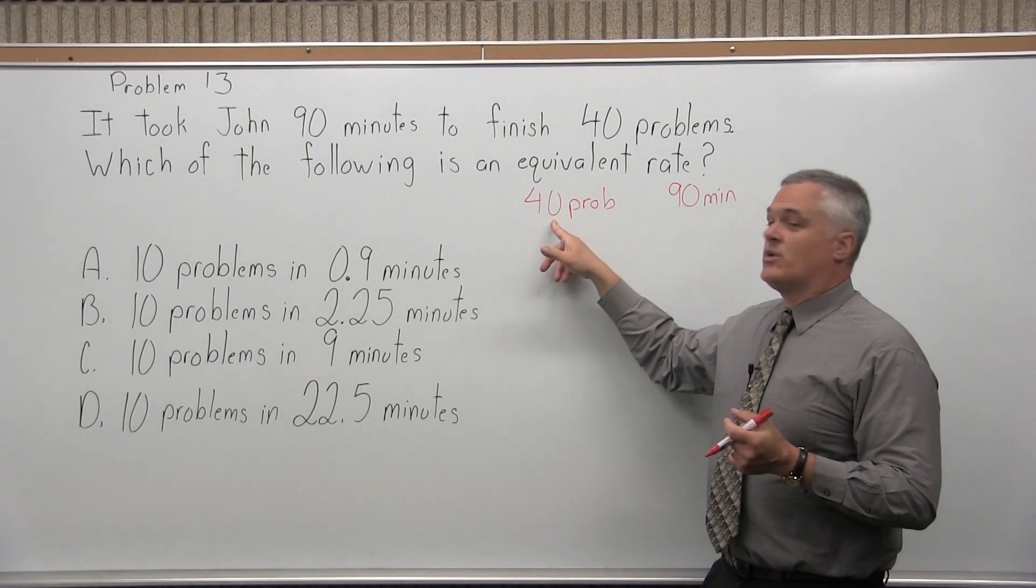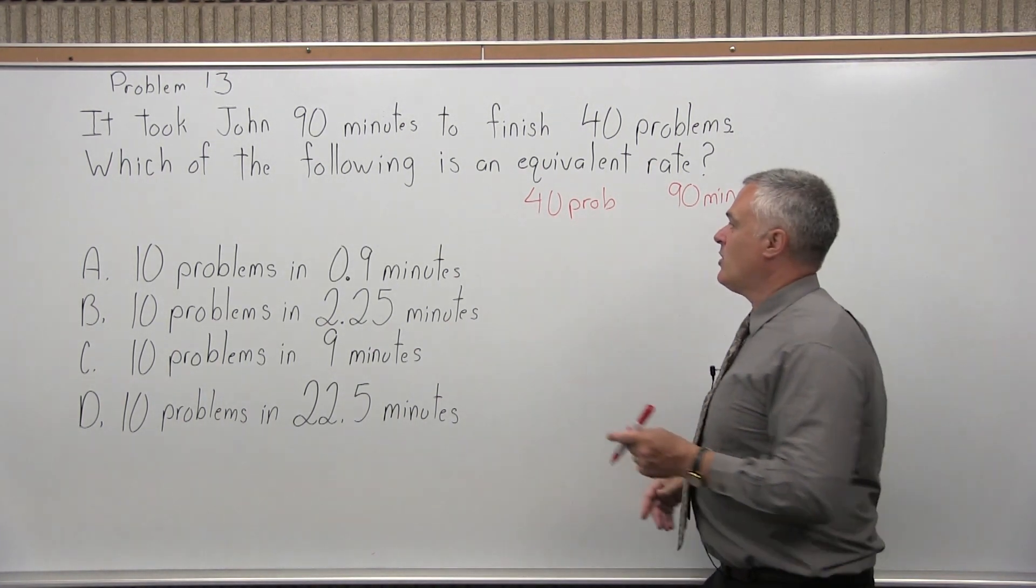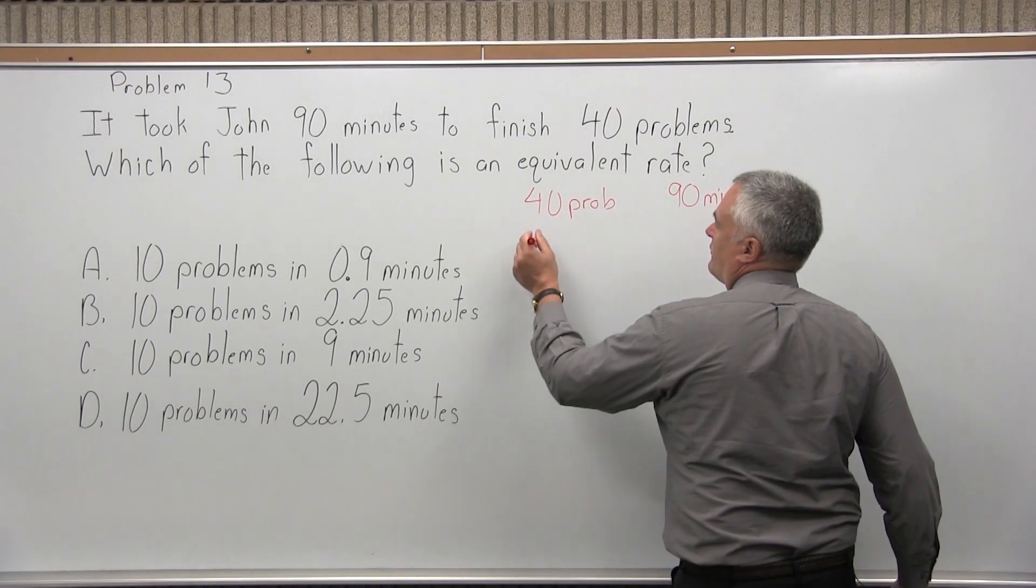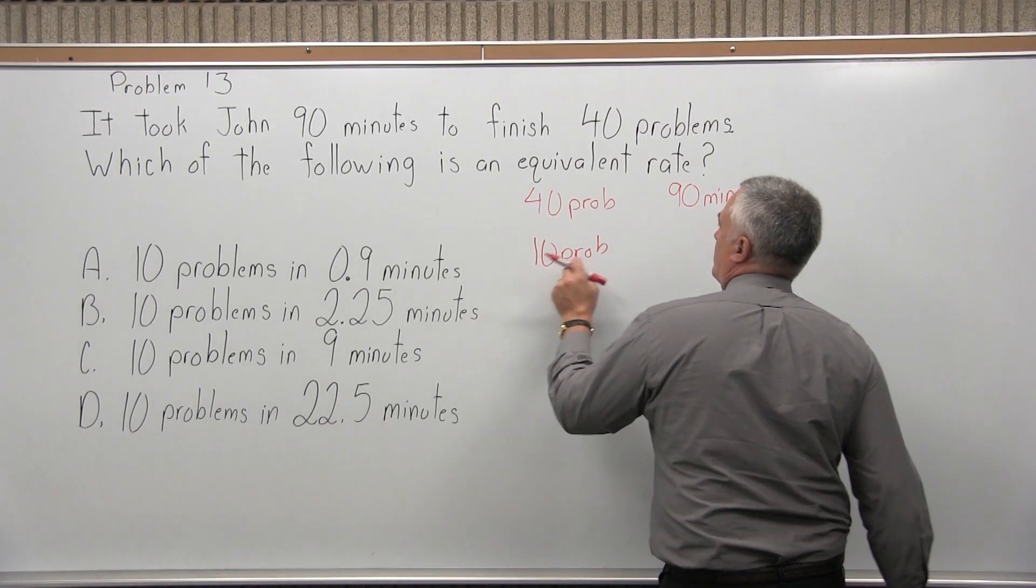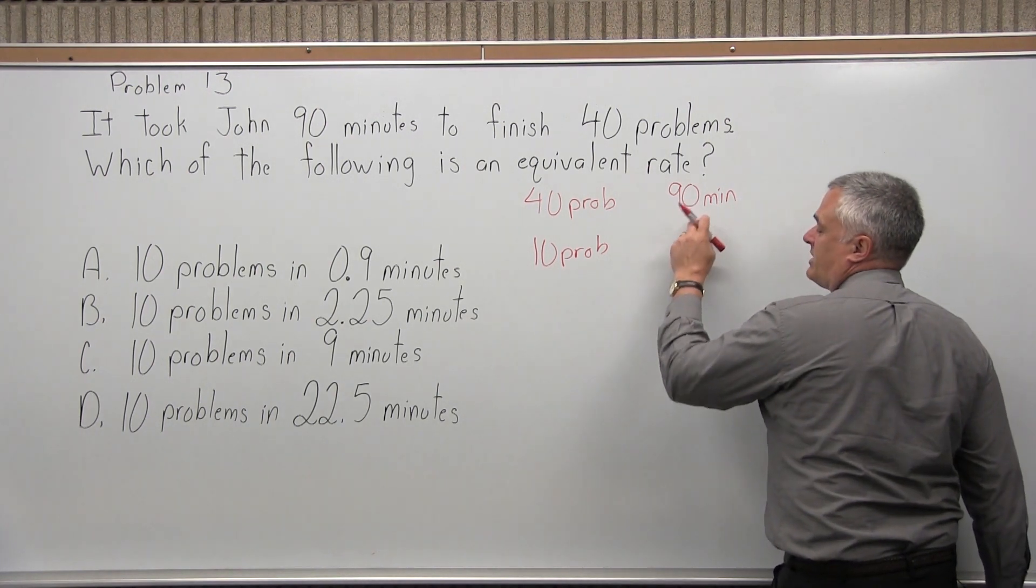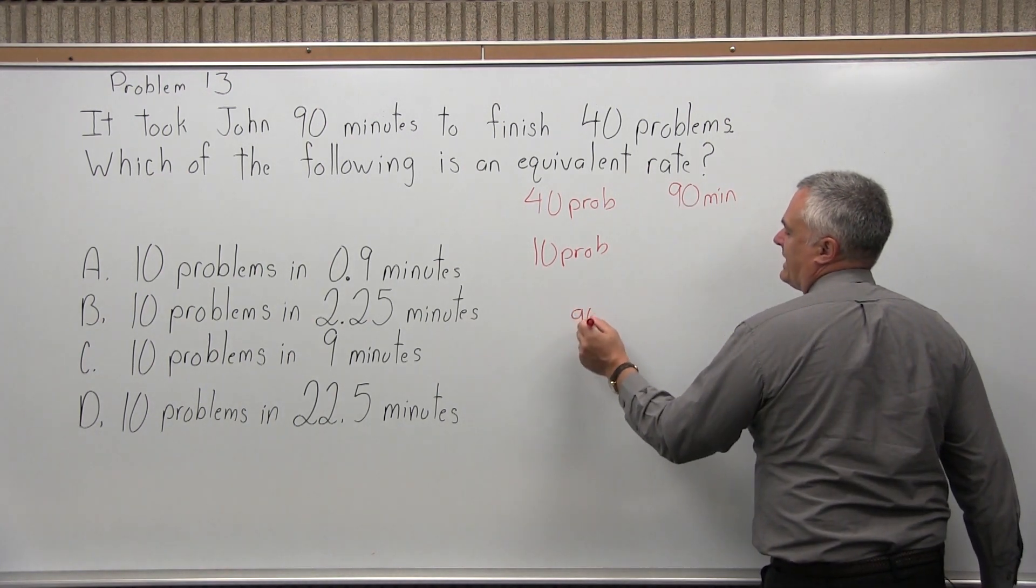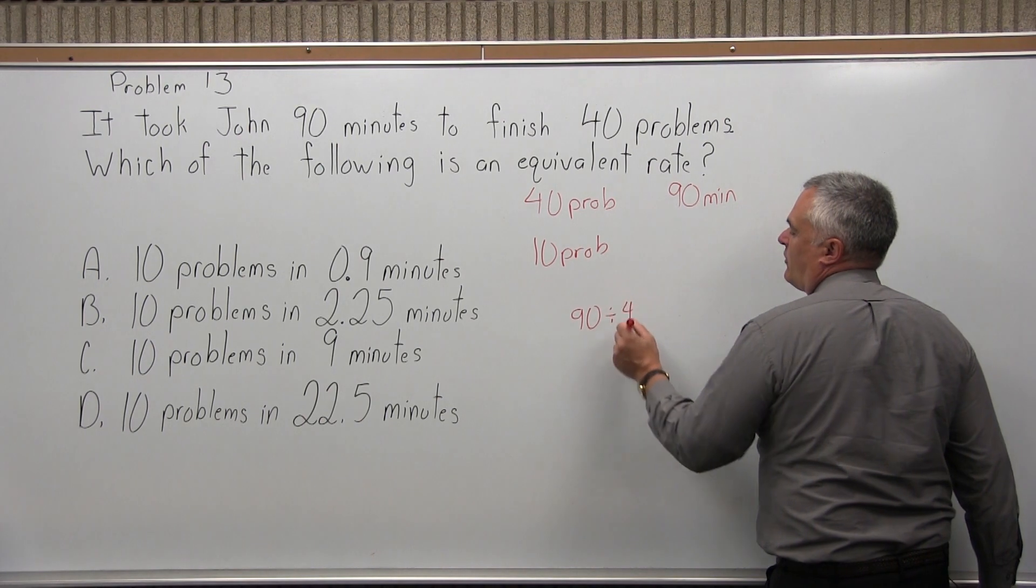So what we do is that 40 problems we can divide out of 4. So 40 divided by 4 will give me 10 problems. So that's one fourth the number of problems, it would take one fourth the amount of time. So you will do 90 divided by 4.